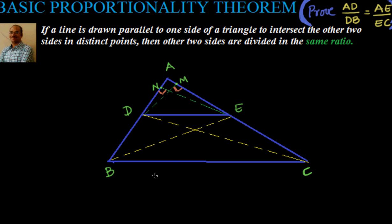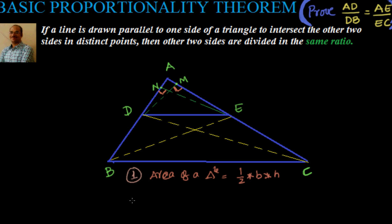To prove this, we will be using the knowledge of areas learned in previous classes. Two points we will be leveraging: one is area of a triangle equals half base into altitude, and the second is that the area of triangles with a common base between the same two parallel lines is equal.